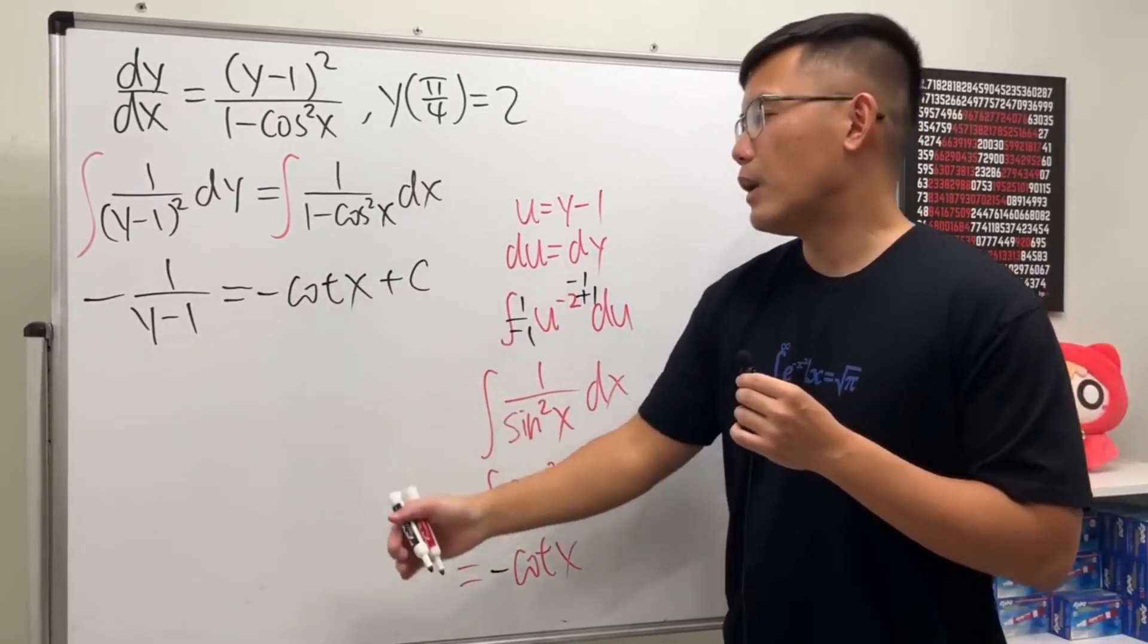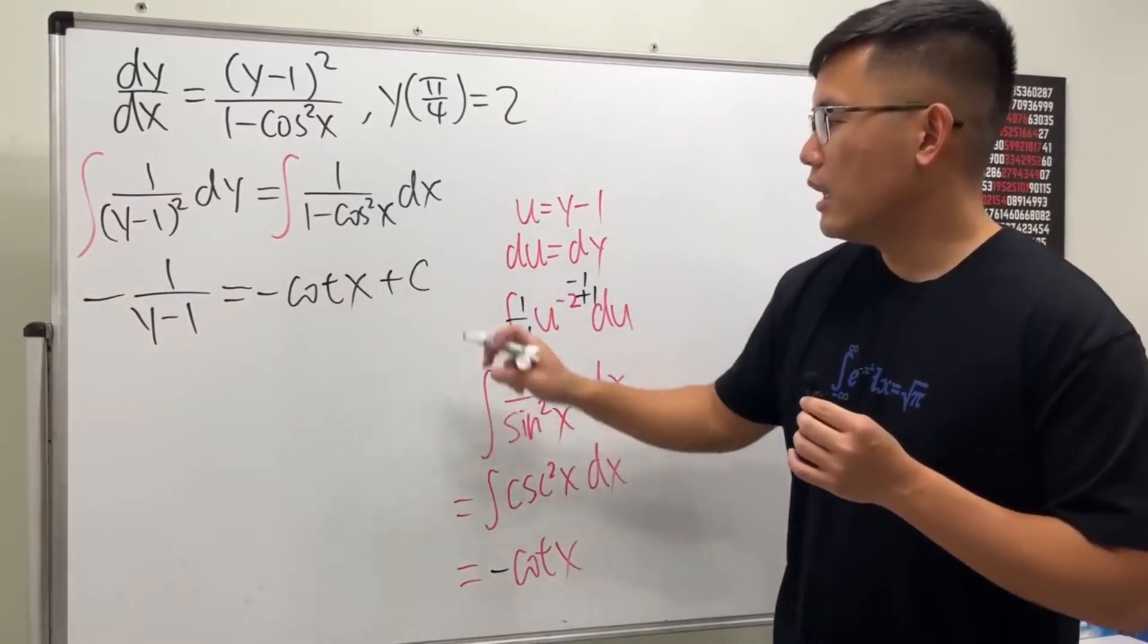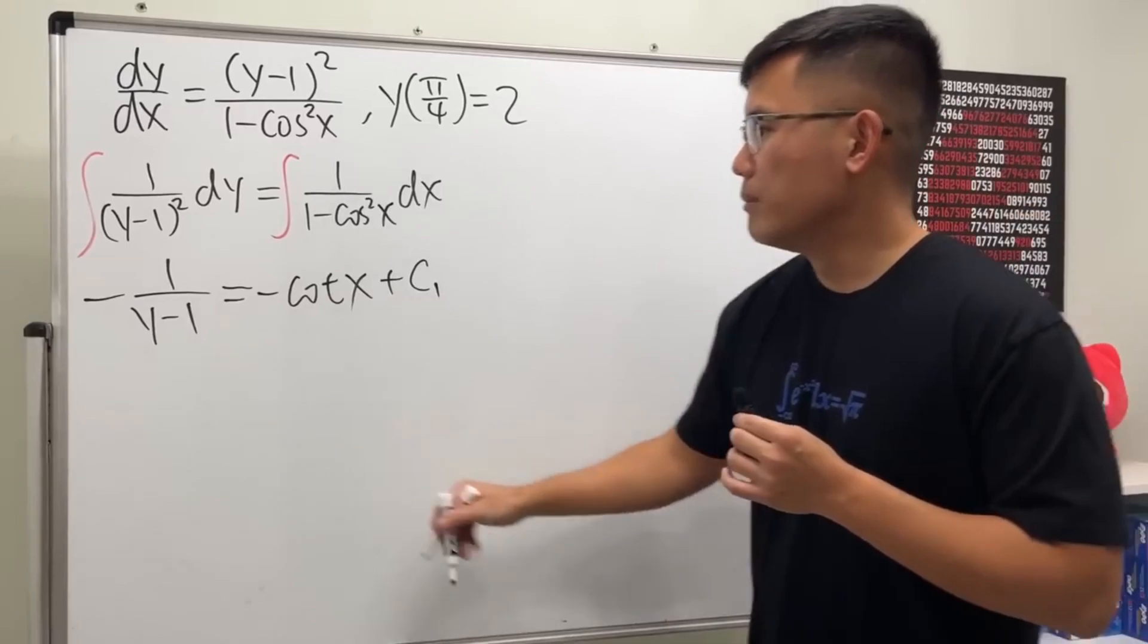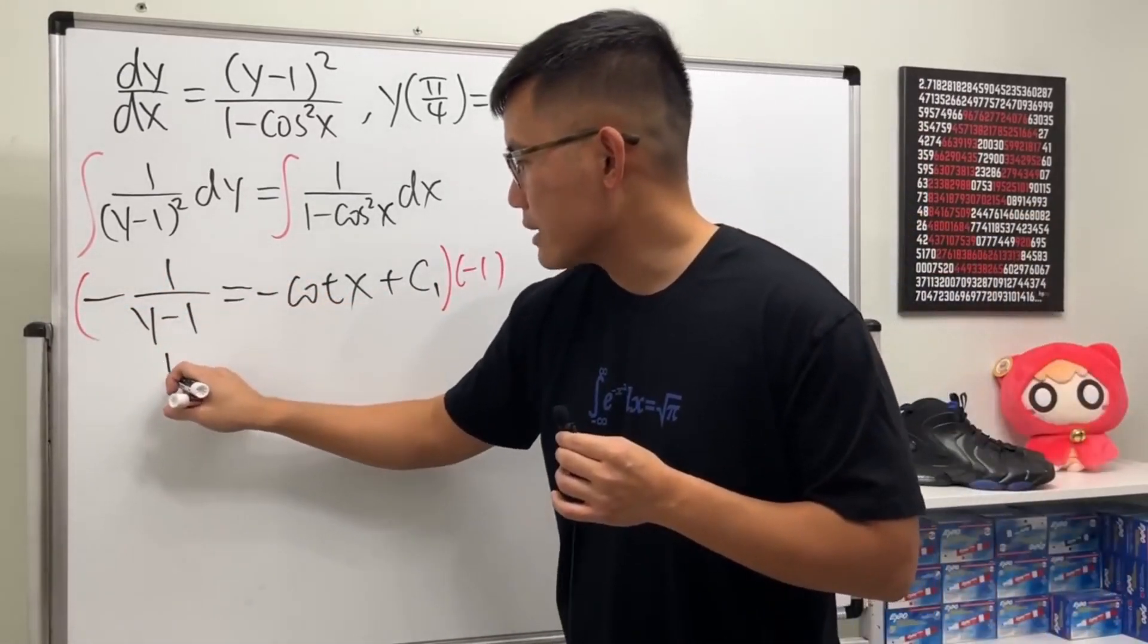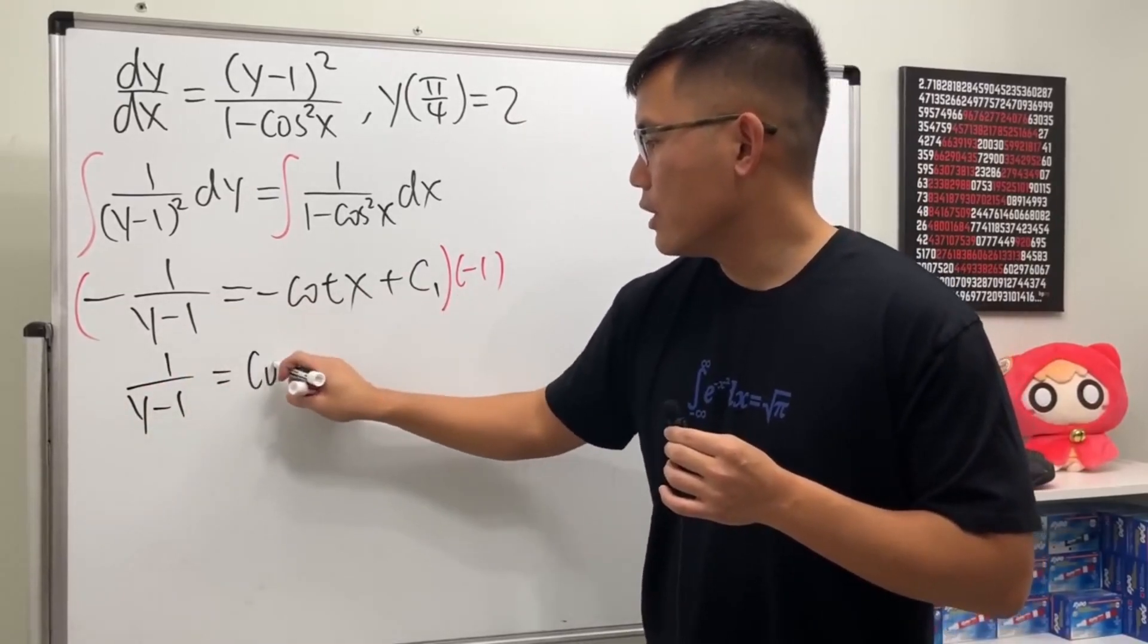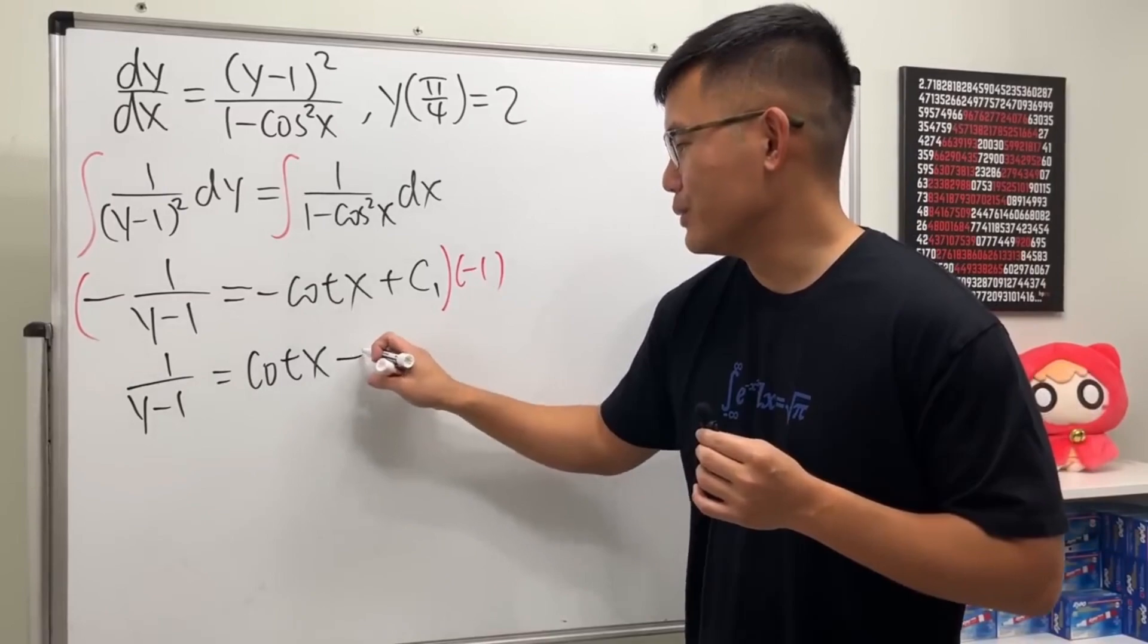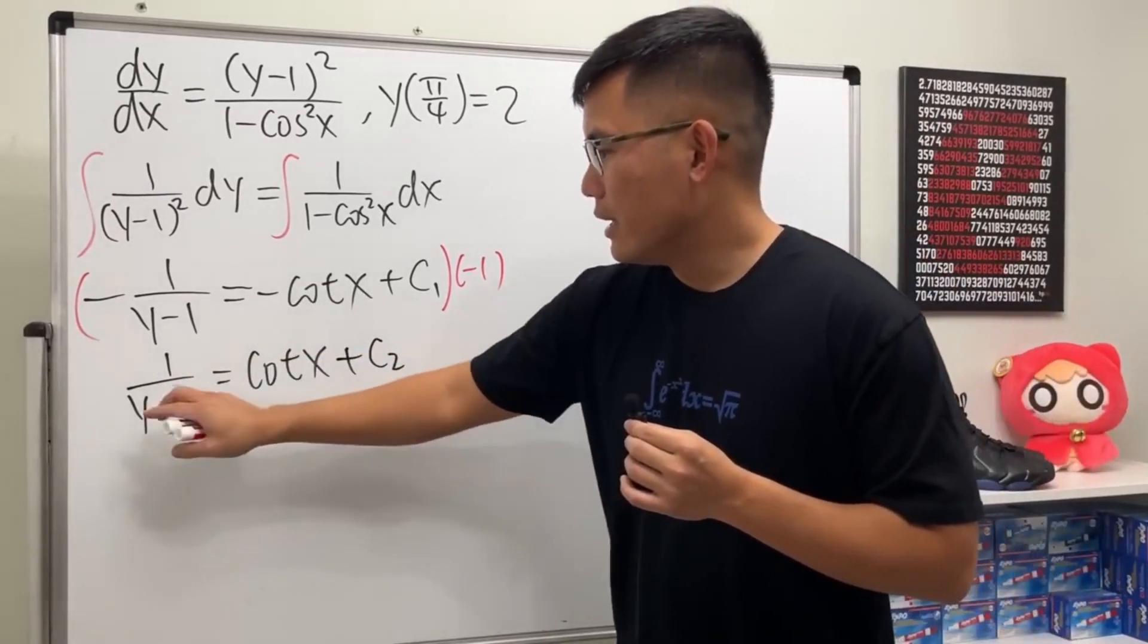So on the left-hand side, we get -cot x, and now let's put down plus C. Because I want to isolate y so we can see the general solution, let's keep track of the constant and call it C₁. Now I'll multiply both sides by -1, so we have 1/(y-1) = cot x + C. C₁ is a constant, -C₁ is also a constant—let's call that C₂. Now let's flip both sides so we get y-1.